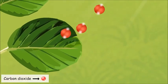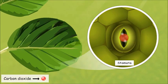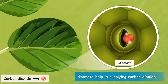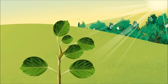To take carbon dioxide from air, there are stomata. Stomata are the minute openings present on the lower surface of the leaves. Through stomata, carbon dioxide moves inside the leaves.